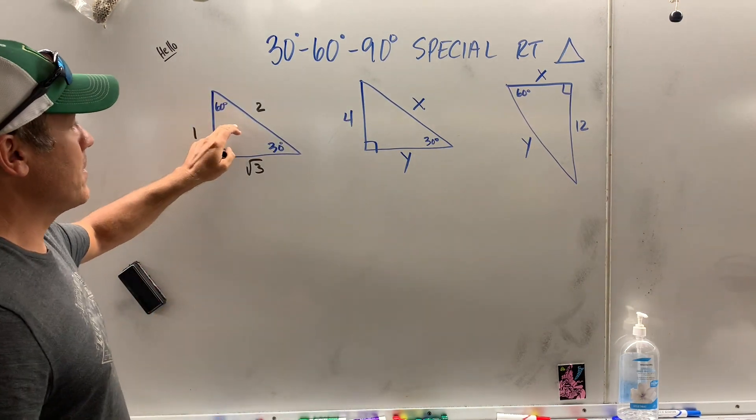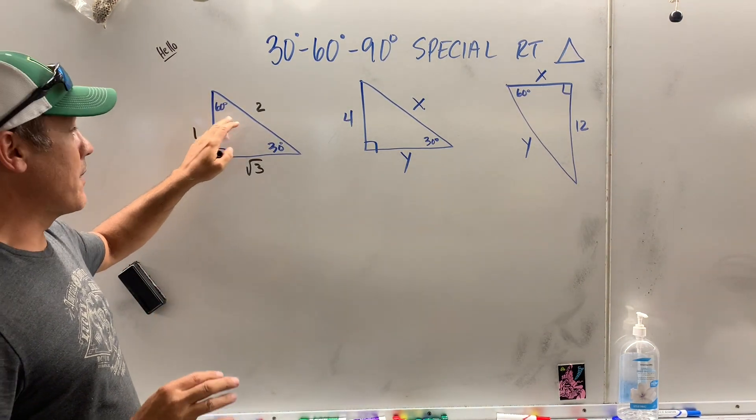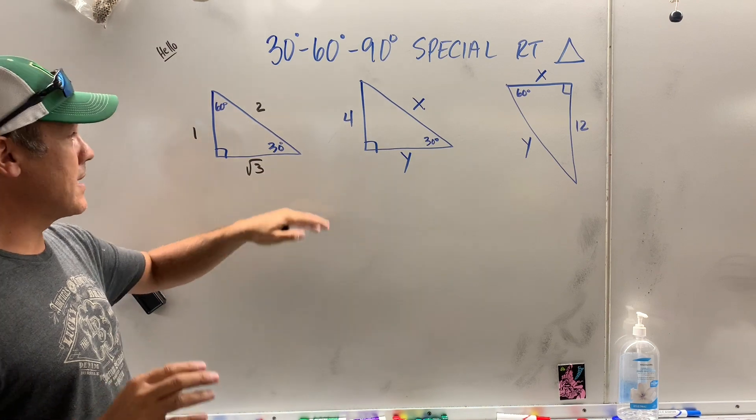So, this is the reference special right 30, 60, 90. I would write it down in every homework question, every test, whatever.